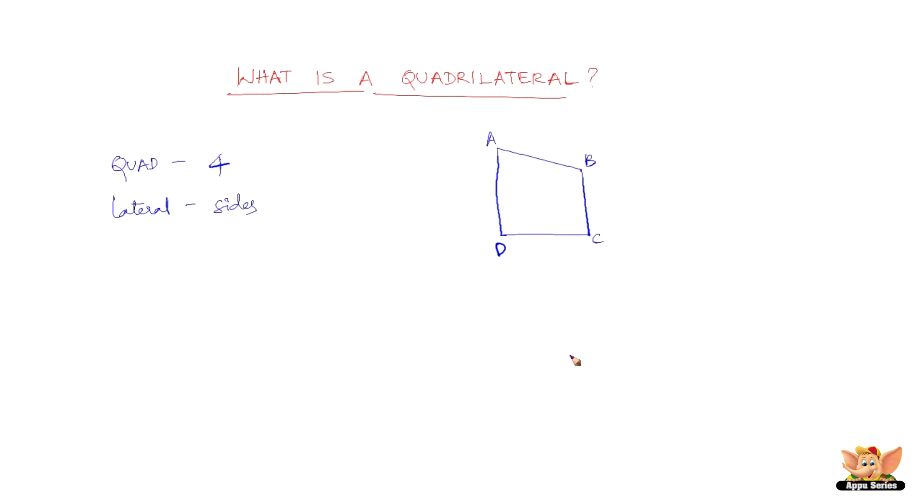What we shouldn't do is, for example, you draw a figure like this. You shouldn't name it like this: A, B, C, D. This is not cyclic at all. It's A, B and C, D in two straight lines. No, this is not the way to do it.